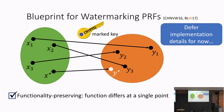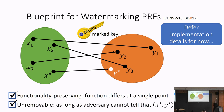First, if the marked key implements this functionality, it is certainly functionality-preserving as long as the domain is super-polynomial-sized — the watermarked key differs from the unmarked program on only a single point, x*. Moreover, this is unremovable as long as the adversary cannot tell which point has been tampered with. The special point x* and y* essentially function as the watermark inside the program.